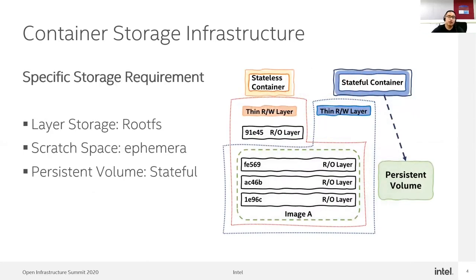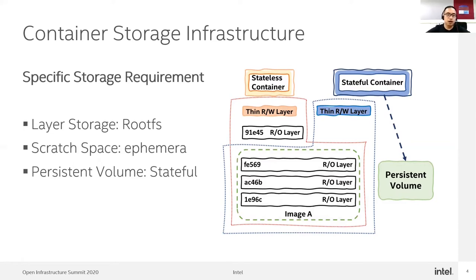Based on specific storage requirements, container storage infrastructure has several characteristics. The first is layered storage, which is for rootFS. The second is scratch space, which is for ephemeral storage. The last is the persistent volume, which is for stateful containers that keep data alive during container crash or deletion.